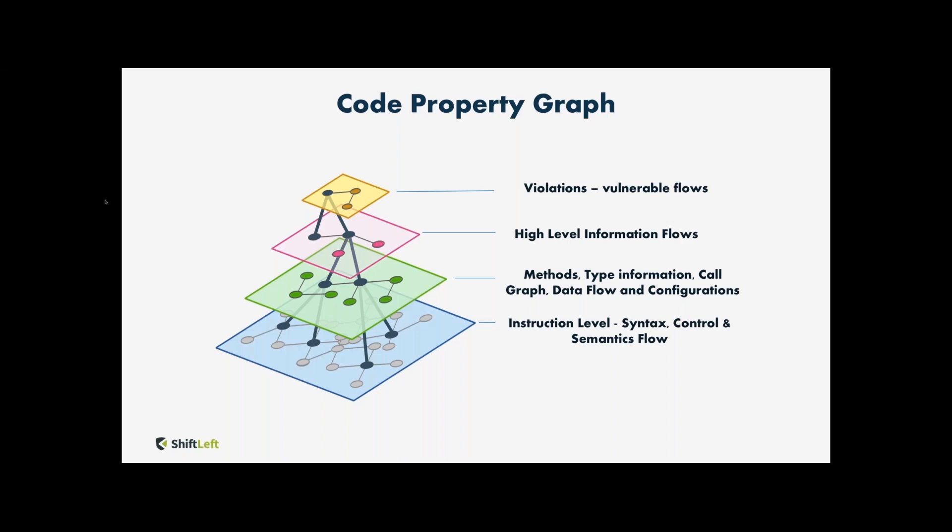The code property graph is essentially a versatile graph of graphs depicting the entire application fabric and all of its piece parts, meaning all the open source libraries it consumes and the open source framework upon which it is deployed.